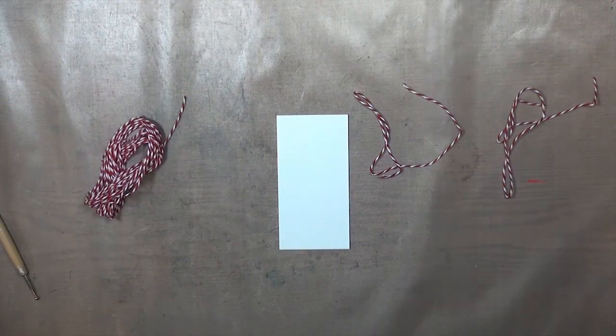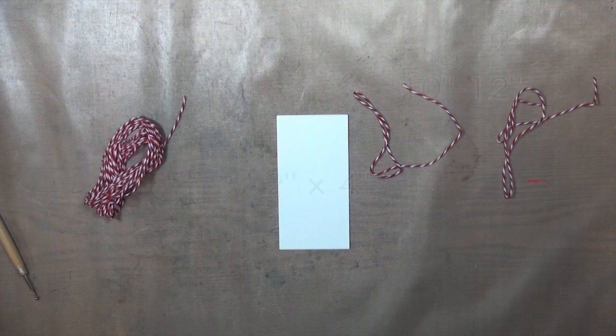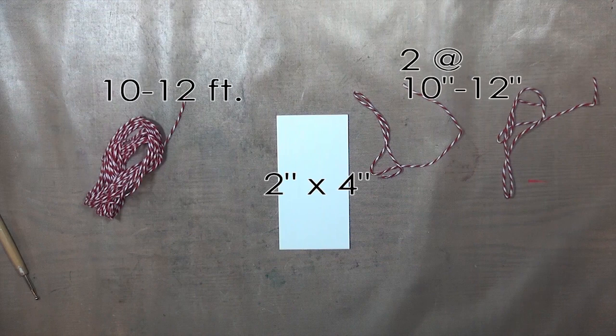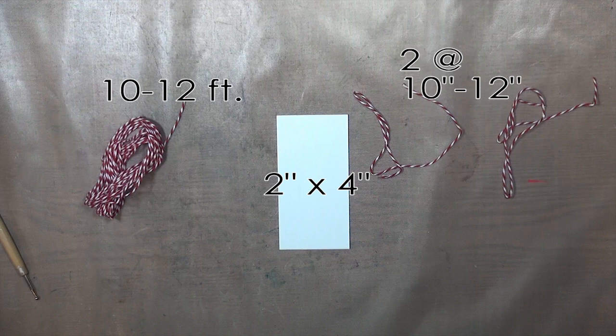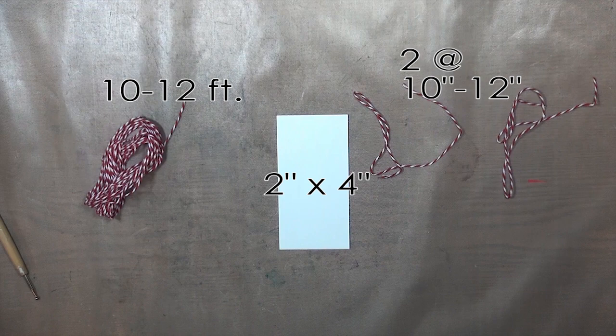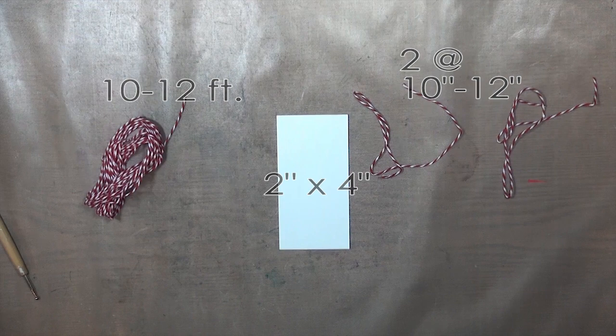To make a tassel for the top you'll need a stiff template that's about 4 inches long. I have a piece of mat board here, but you could use cardboard or heavy plastic. You just want something that's not going to curve as you wrap your twine around it. I've also got about 10 to 12 feet of twine here, and then 2 cut pieces of twine that are about 10 to 12 inches long each.